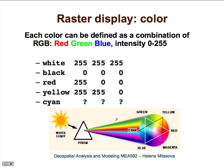Now let's look at color. Color is a very important tool for displaying raster data. We need to keep in mind that each color can be defined as a combination of red, green, and blue, each with varying intensity between 0 and 255. For example, white will have red, green, and blue all at 255; black will have all zeros. Yellow will be a combination of red and green, and you can see that cyan will be a combination of green and blue.